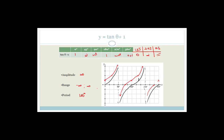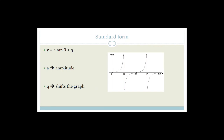To summarize: A is the amplitude — it changes the steepness or height of the graph. It also makes the graph positive or negative, so it either makes it bigger or smaller, or makes it flip across the x-axis. Q shifts the graph — it's a vertical shift, either up or down.